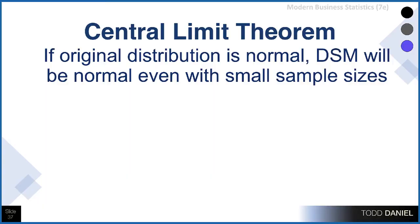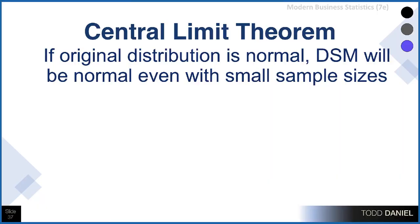And this brings us to the central limit theorem. Now let's start with something that totally makes sense. If your original population is normally distributed, and you draw a sample from that normally distributed population, you would expect that your sample would also be normally distributed. If the original distribution is normal, the distribution of sample means will be normal, even for small sample sizes.